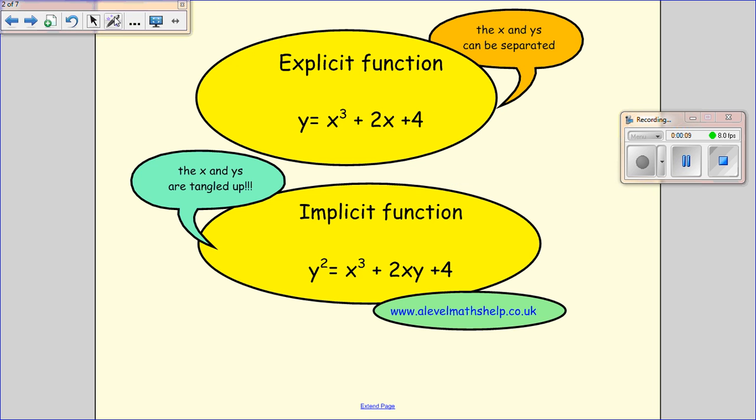So first we need to know what an implicit function is. Previously you've dealt with explicit functions where the x and y's can easily be separated so that you get y is a function of x, so y equals some function of x. In an implicit function, the x and y's are tangled up and so you cannot easily just make y equal to a function of x and often the y is of a higher power.